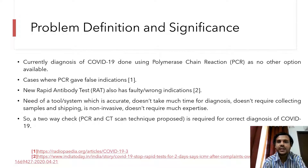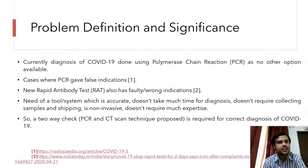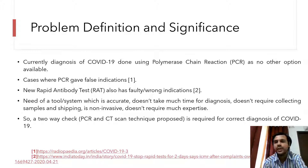Currently the diagnosis of COVID-19 is done using the PCR technique, as no other options are available. But there are cases where PCR has given false indications. The new rapid antibody test has also given some wrong indications. So what should be the solution? We are in need of a tool or system which is accurate, doesn't require much time for diagnosis, doesn't require collecting and shipping samples, is non-invasive, and doesn't require much expertise.